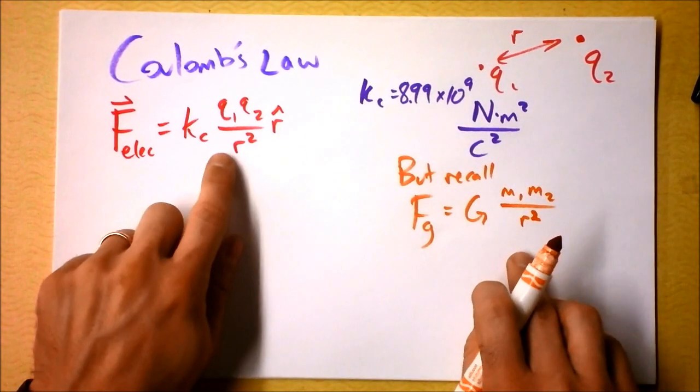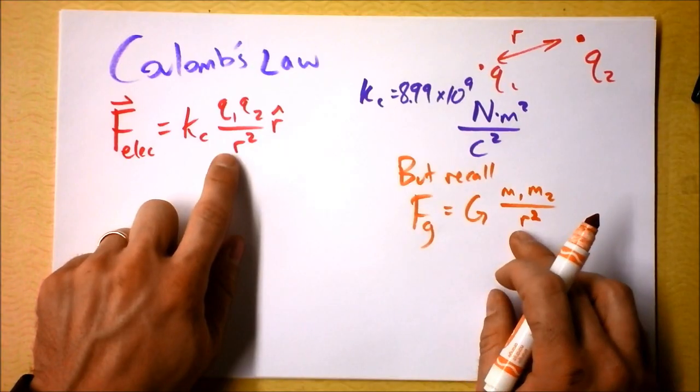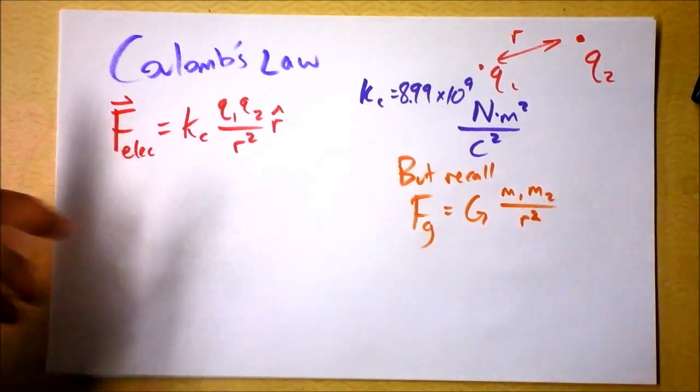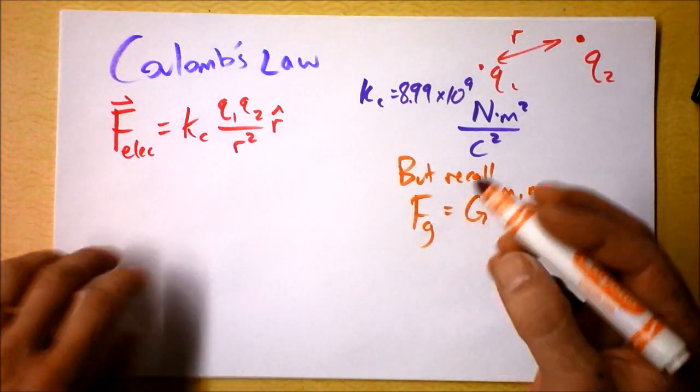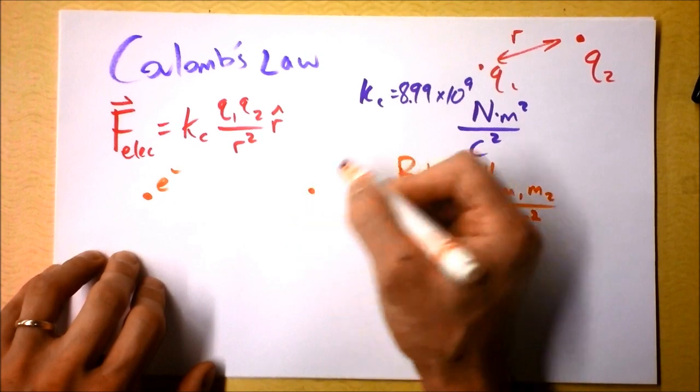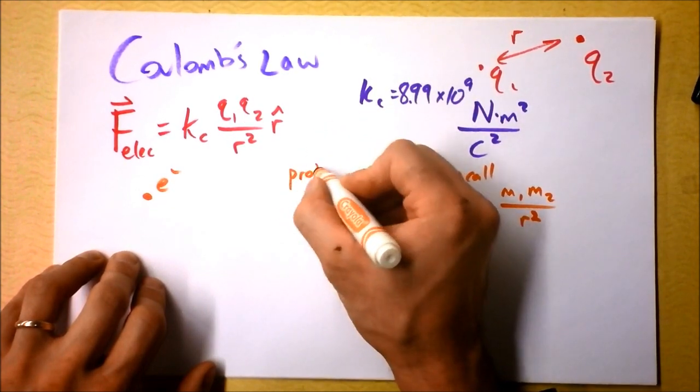Now, if you look at the similarity between these two suckers, you might be inclined to find the ratio of the electric force to the gravitational force for, let's say, an electron and a proton. You got some electron right here, and you got a proton right over here, cool.